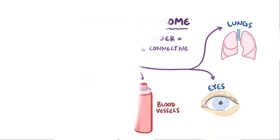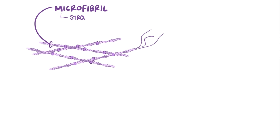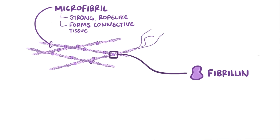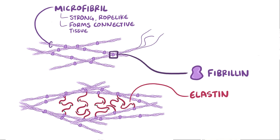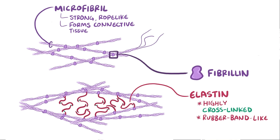Normally the interstitial space of various body tissues is full of microfibrils, which are strong rope-like structures that provide tissue integrity and form connective tissue. The main component of microfibrils is a glycoprotein called fibrillin. In some structures, microfibrils form a scaffold for additional proteins, like elastin. Elastin fibers are highly cross-linked, and that gives them a rubber band-like quality, which allows tissues to stretch and then spring back to their original shape.